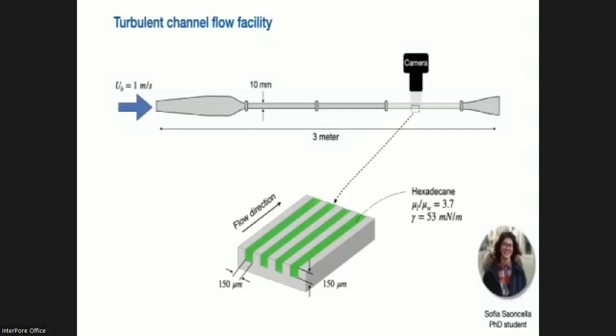Without any barriers. So these are just longitudinal grooves in the flow direction. And we fill them with hexadecane. And then we mix them also with fluorescent dye and use a camera from above to visualize the lubricant and the interface in the presence of turbulence.